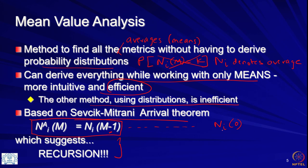n_i(0) of course is just going to be 0 for all i. Based on this, we can go step by step — from n_i(0) we can get n_i(1), then from n_i(1) we can get n_i(2), and continuing this way we can get the metric at any load level, and from this metric we can get all the other metrics.